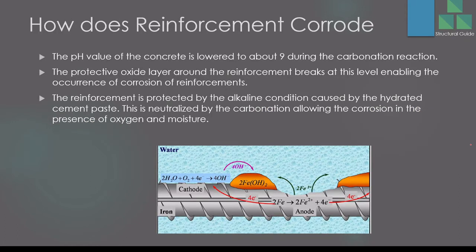How does reinforcement corrode? In reinforced concrete, the reinforcement is protected by the concrete cover, so it is not exposed. However, generally the pH value of the concrete around the reinforcement is about 13. With carbonation, this pH value lowers to about 9. This causes damage to the protective oxide layer around the reinforcement. The reinforcement is protected by the alkaline condition caused by the hydrated cement paste.